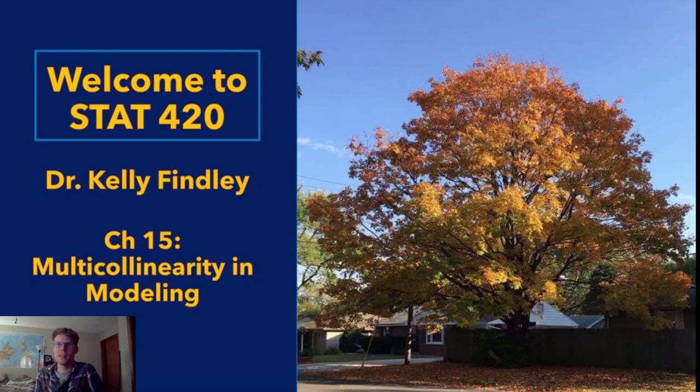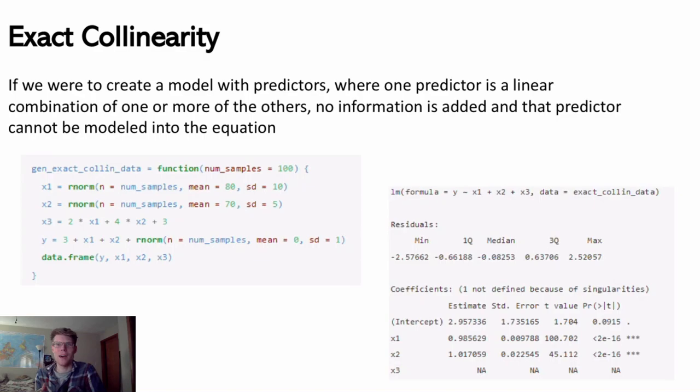Multicollinearity comes from collinearity, which means that we have linear combinations. If two variables are collinear with one another, it means that one is just a linear combination of the other, and knowing one means that I can exactly predict the other.